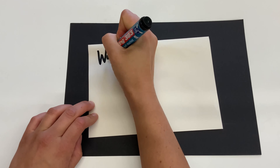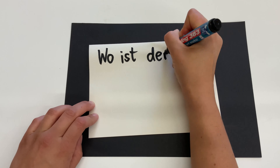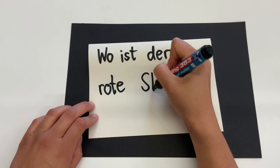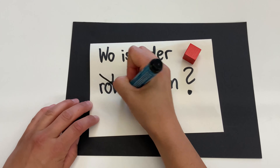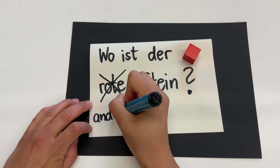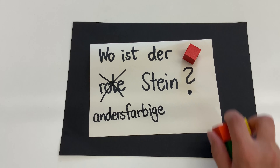Ziel war es, dass die Kinder beim fertigen Gebäude bestimmen, wo der rote Stein ist. Und wie es so ist, hatten wir natürlich nicht genug farbige Steine, um das genau nachzustellen. Also musste ich als flexible Lehrerin die Fragestellung ein bisschen ändern – nicht mehr wo ist der rote Stein, sondern wo ist der andersfarbige Stein.